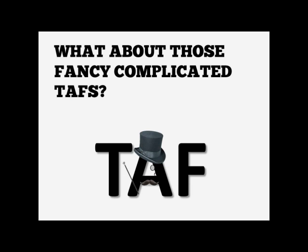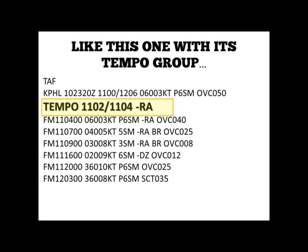Now what do we do when the TAFs get more complicated? One of the more common things you'll see is a TEMPO group. Tempos are used for any condition in wind, visibility, weather, or sky that are expected to be occasional and occur during less than half of the time period. These are for high probability expectations. What you see here are the beginning and ending hours, so from 2 to 4Z on the 11th. Note that this particular TEMPO is for weather — light rain that will be occasional. These TEMPO groups will never exceed 4 hours.